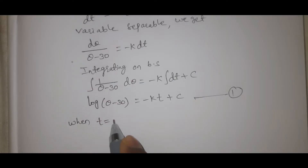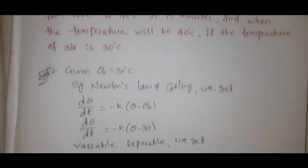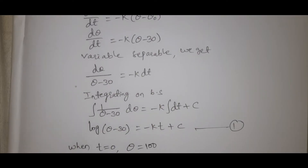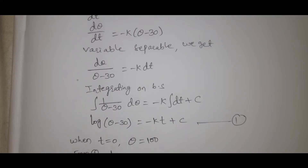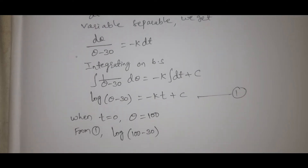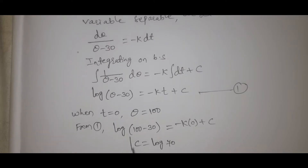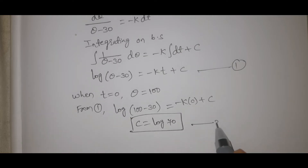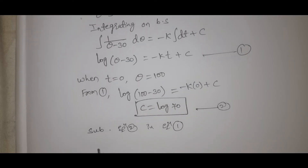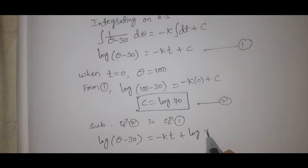Now when t equal to 0, initial time, theta equals 100. Substituting into equation 1: log of 100 minus 30 equals minus k into 0 plus C, so C equals log 70. This is equation number 2. Substituting equation 2 in equation 1, we get log of theta minus 30 equal to minus kt plus log 70.